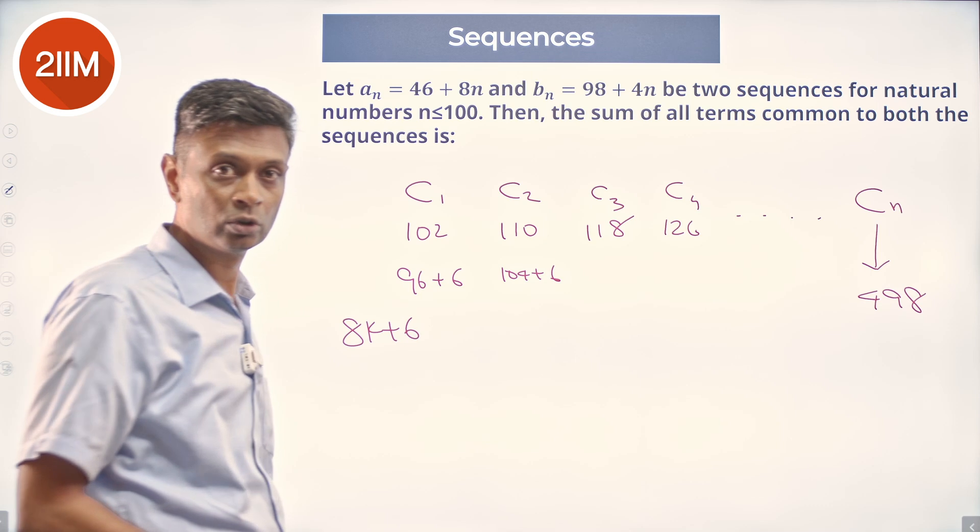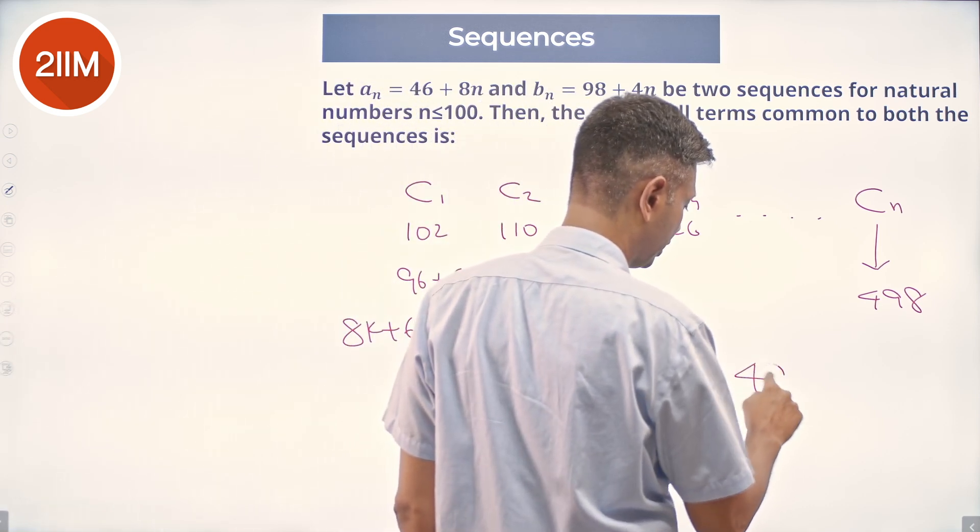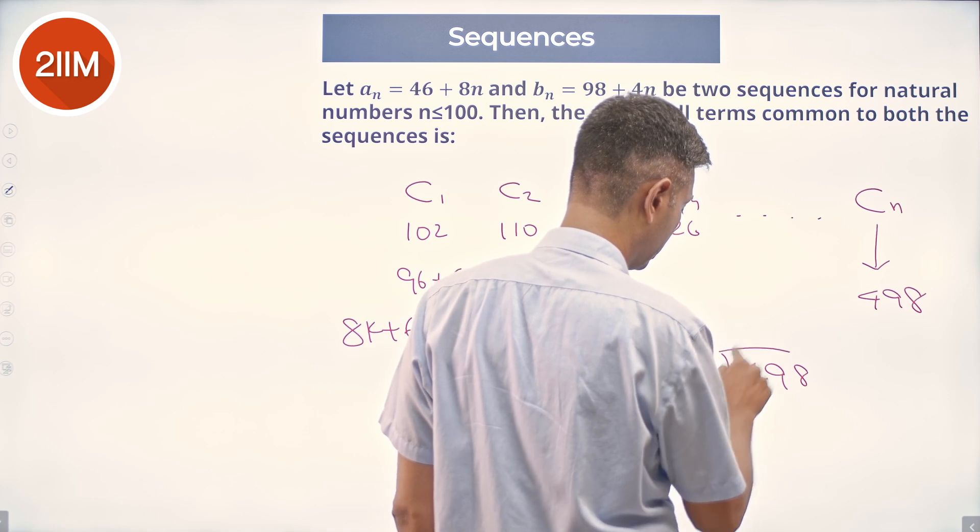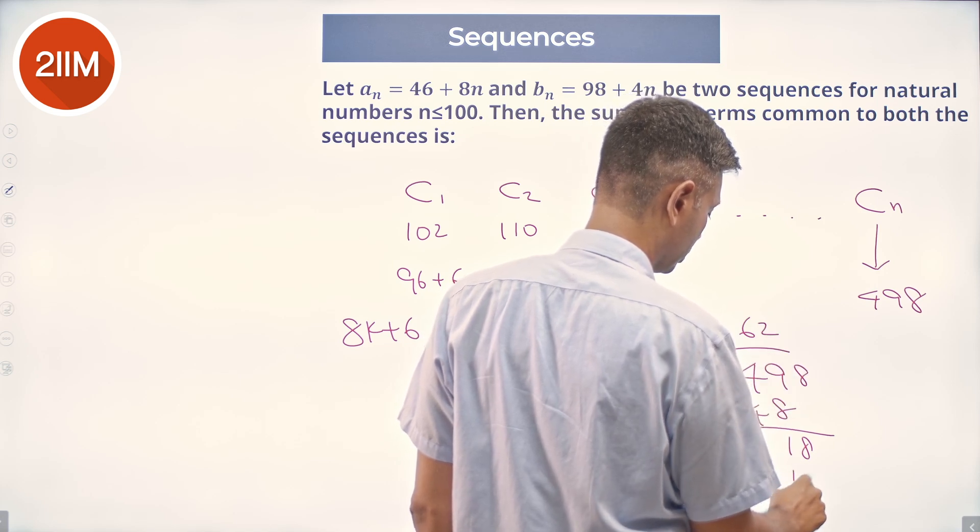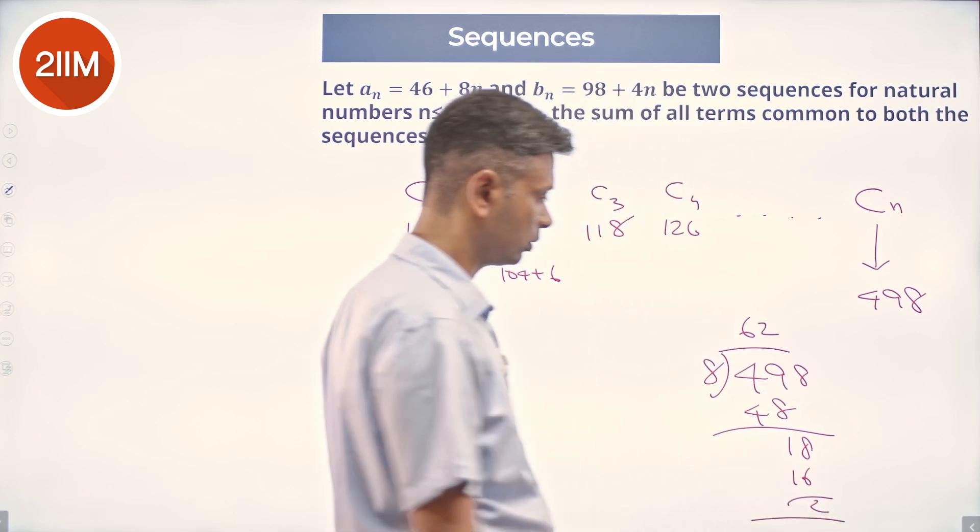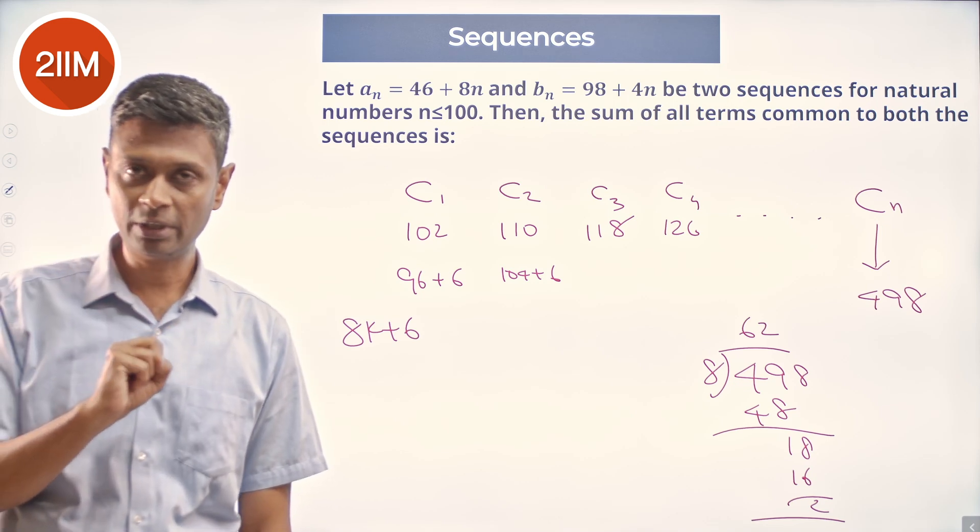498, is it of the form 8k plus 6? I'm going to take 498 divided by 8. This is 8k plus 2. So 498 will not be an element here.